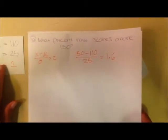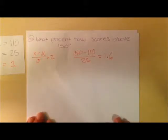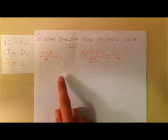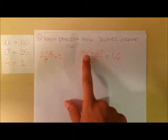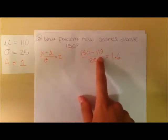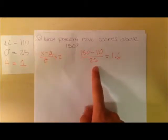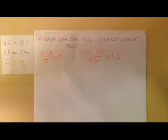Part B asks us what percent of scores are above 150. So we're going to use a very similar process that we used in part A, and we're going to take the Z score again. So we take our given value, 150, subtract the mean, 110, and then divide by the standard deviation of 25. This gives us a Z score of 1.6.